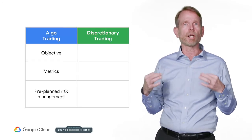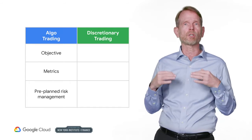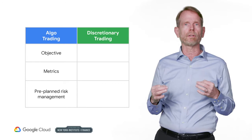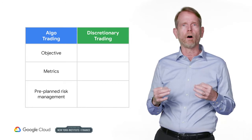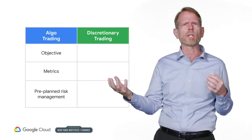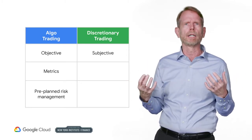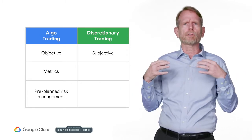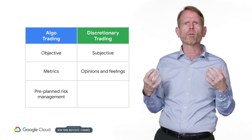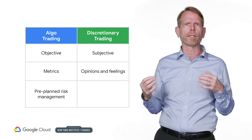Algo traders are objective, metric-driven, and focused on dispassionate risk management. Discretionary traders, on the other hand, often bet huge sums on hunches, beliefs, intuition, gut feelings, or opinions. Their strategies are subject to shifts in attitudes, emotions, and energy level, and are heavily skewed by recent memory.